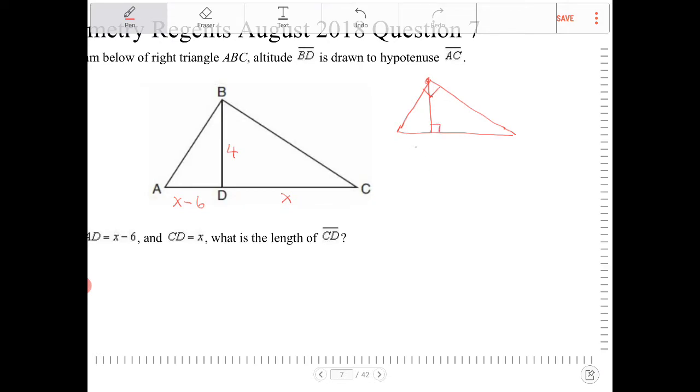that altitude is going to partition the hypotenuse into segments of A and B. And the relationship between those partitions and the length of the altitude is going to be A times B equal to C squared.